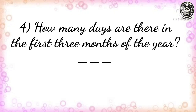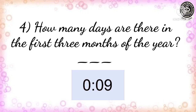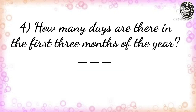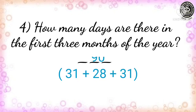Now, let us see question number 4. How many days are there in the first 3 months of the year? Your time starts now. Yes, time over. Let us check the answer. January has 31 days, February has 28 days, and March has again 31 days. So the total number of days will be 90 days.